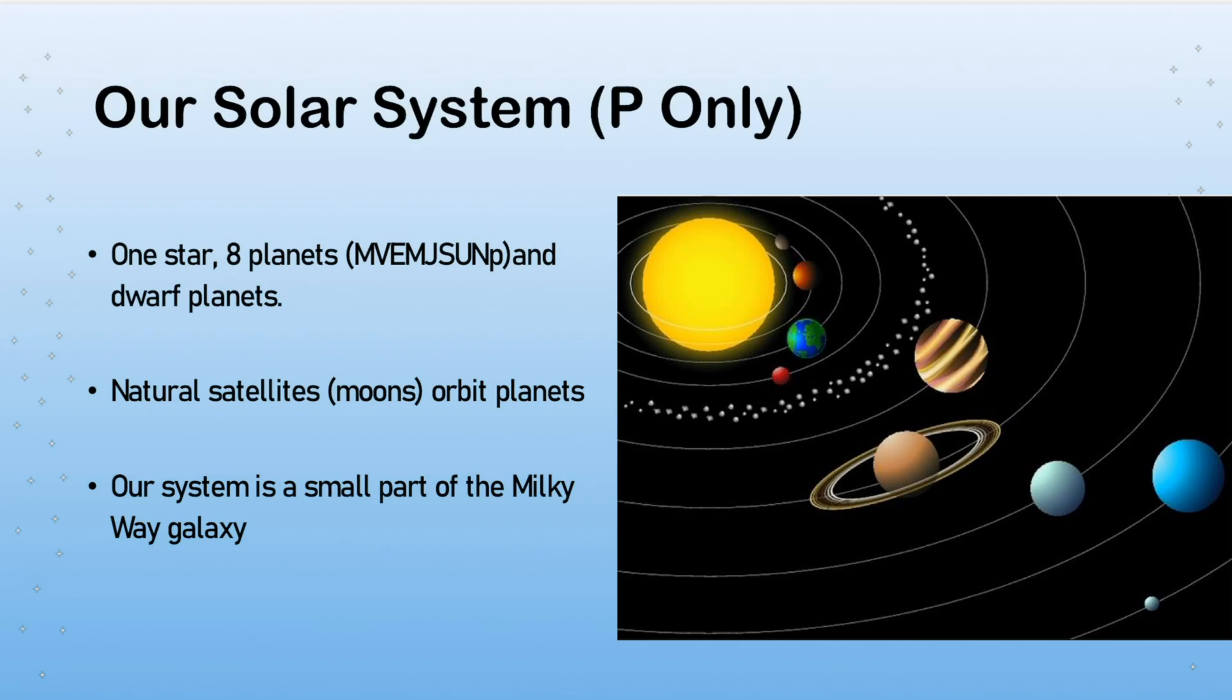Our solar system is made up of one star - that's a solar system, solar meaning Sun, that's in the middle. We then have eight planets and various other dwarf planets. We need to know that they are loosely there and it's worth knowing the order of them anyway.